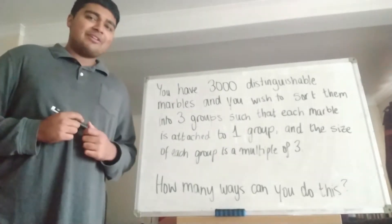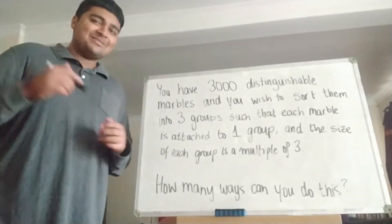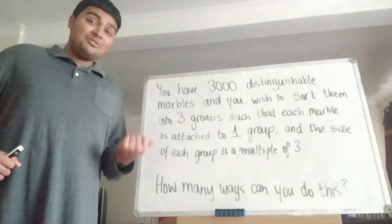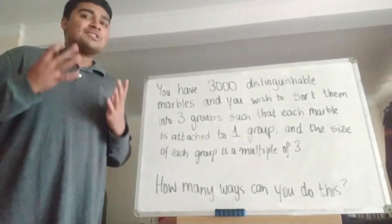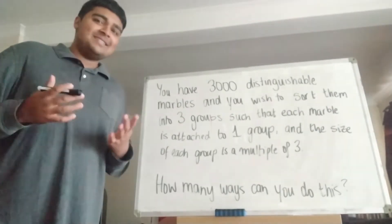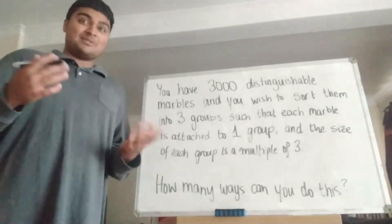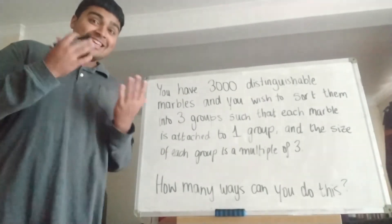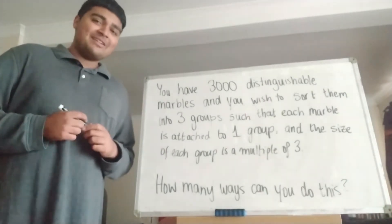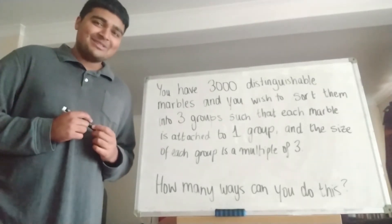Now this may just seem like an ordinary combinatorics problem, but I'll give you a hint to the solution: the solution in fact involves complex numbers, which I've never seen before used in a solution to a combinatorics problem, so I think it's pretty cool. With that hint, if you want to have a go at the problem, pause the video now and give it a go for yourself, and I'm going to jump straight into the solution.